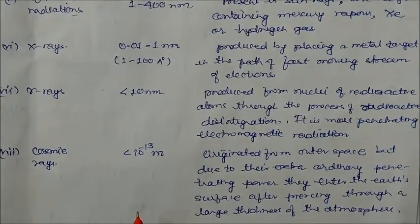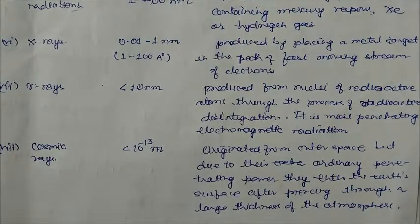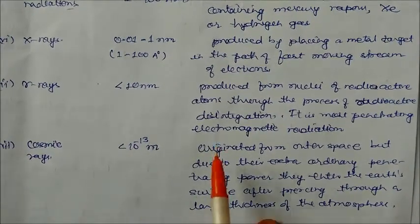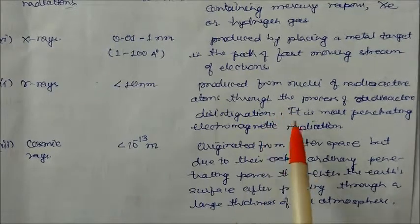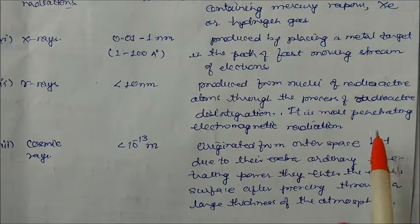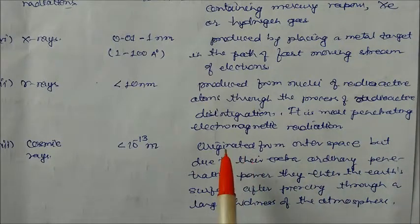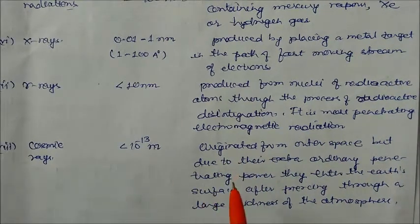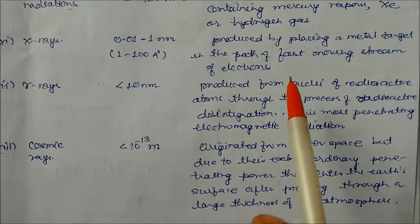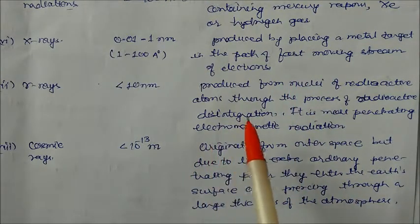Gamma rays have a wavelength less than 10 nanometers. They are produced from the nuclei of radioactive atoms through the process of radioactive disintegration. Gamma rays are more penetrating electromagnetic radiations than X-rays — both are penetrating, but gamma rays are highly penetrating.